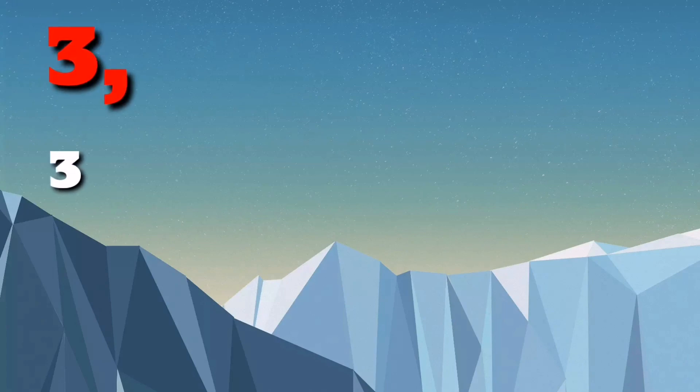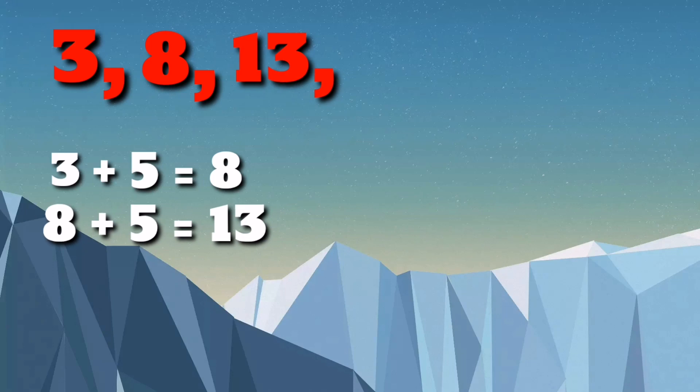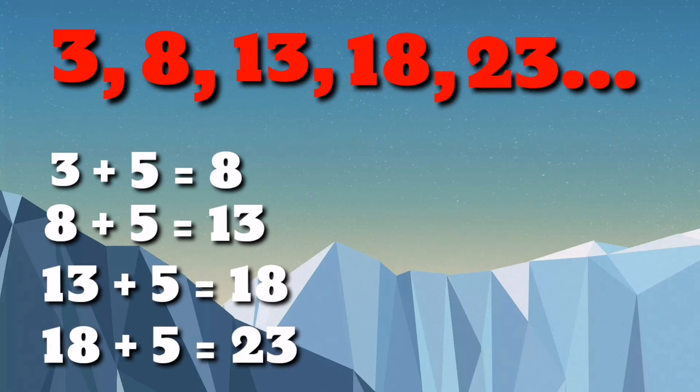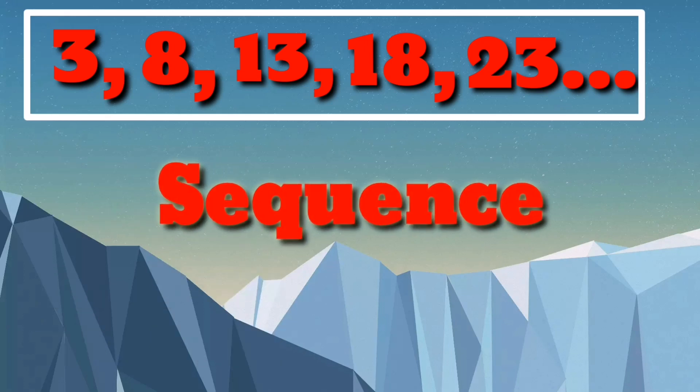Suppose we choose the number 3 as the first number in our pattern. Then we can choose to add 5 to our first number resulting in 8, which is our second number. Repeating this pattern, we obtain 13, 18, 23, and so on, as the succeeding numbers that form our pattern. In mathematics, we call this ordered list of numbers a sequence.